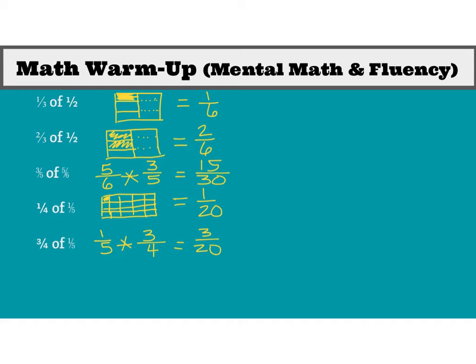Let's take a look to see how you did. The first problem, one-third of one-half — I drew a picture, divided it in half, and then divided that half into thirds, and colored one section. We know that the answer is one part out of a total of six. But when we did fraction-of problems previously, we could take those fractions and just multiply. If we had multiplied one-third times one-half, we would have gotten one-sixth as our answer.